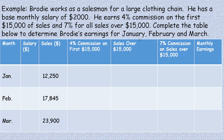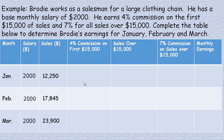The base salary is two thousand dollars for each of the months. We're given the sales figures: in January he sells twelve thousand two hundred fifty dollars worth of merchandise, in February seventeen thousand eight hundred forty five, and in March twenty three thousand nine hundred dollars.